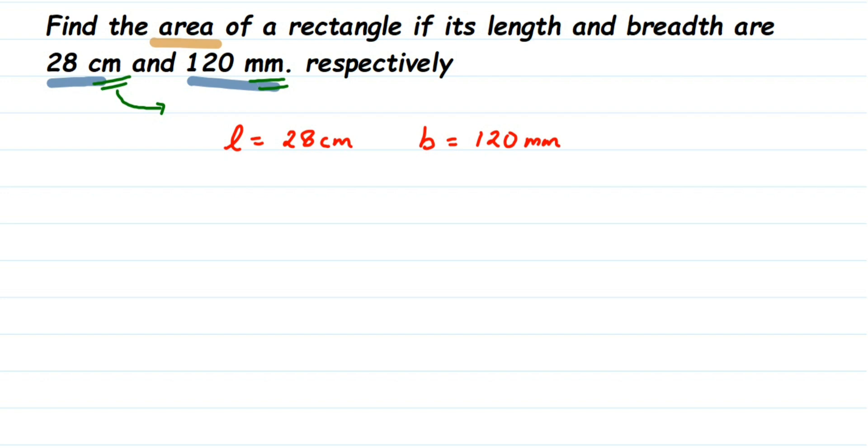So we know that 1 cm is equal to 10 mm and here we are converting mm to cm which means we are converting a smaller unit to higher unit. Whenever we convert smaller to higher, we always divide but with what number we should divide? With 10 because 1 cm is 10 mm.